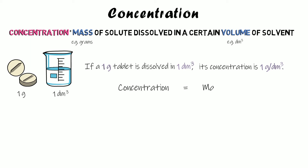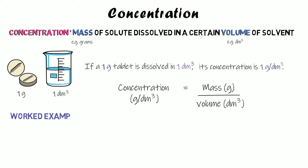To calculate concentration we use the equation: concentration equals mass divided by volume. Because we're using mass measured in grams divided by volume in decimetres cubed, the units of concentration are grams per decimetre cubed.